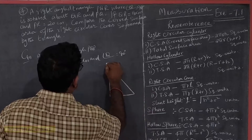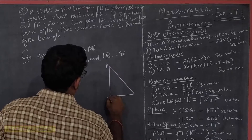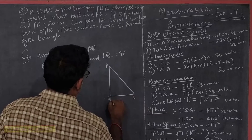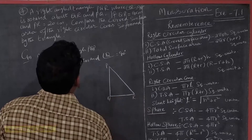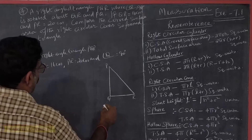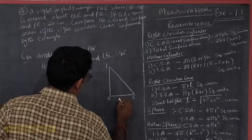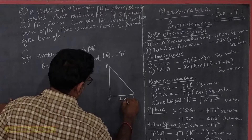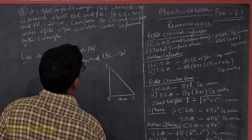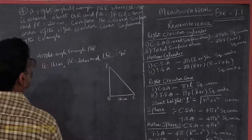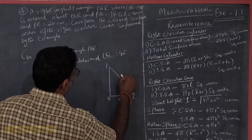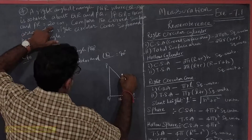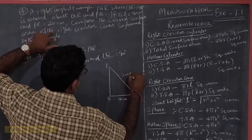So we draw the triangle with vertices P, Q, and R. QR is equal to 16 cm and PR is equal to 20 cm.